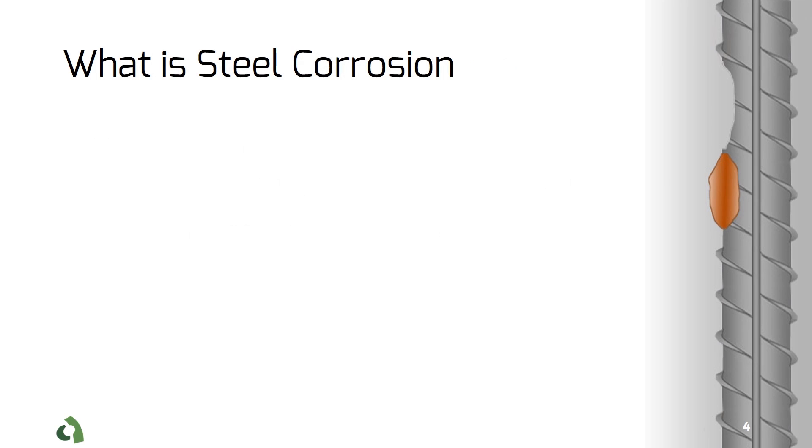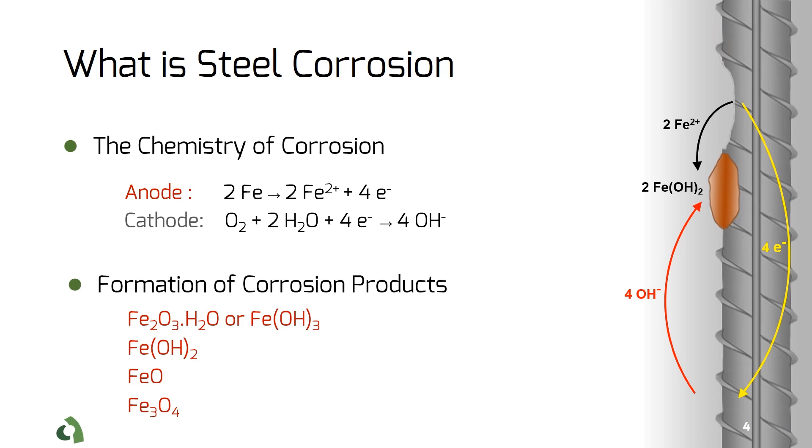In this chemical reaction, a section of the steel material acts as an anode. This means that the steel loses electrons. On the other hand, another portion of the reinforcing mesh acts as a cathode.